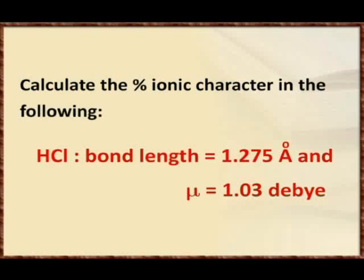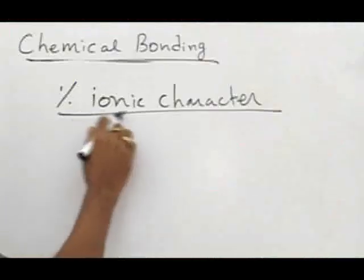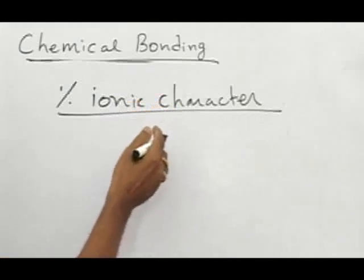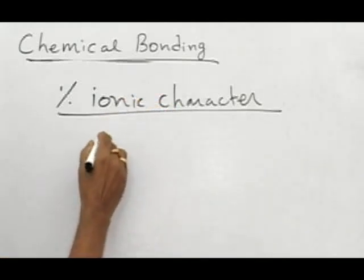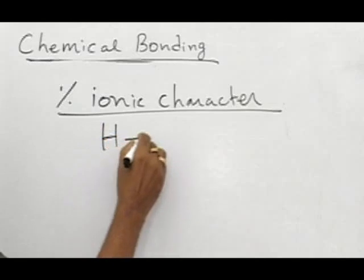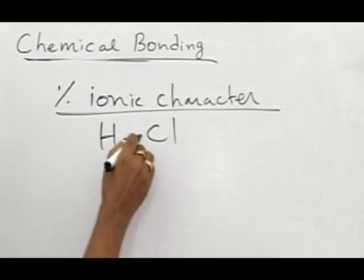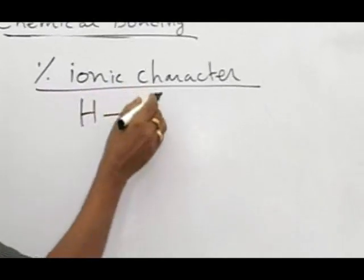In this problem, we are going to calculate the percentage ionic character from dipole moment. The referred molecule is hydrogen chloride, HCl molecule. In this molecule, we have to find out the percentage ionic character.